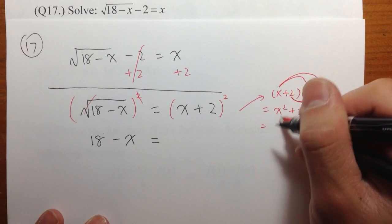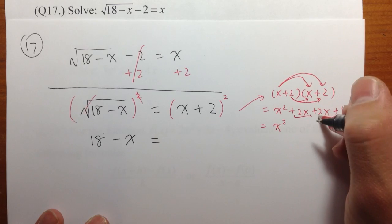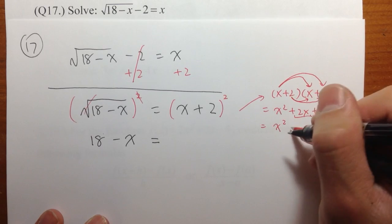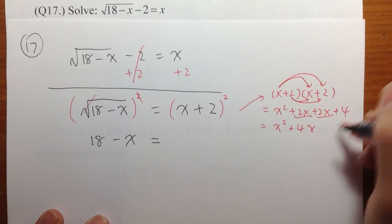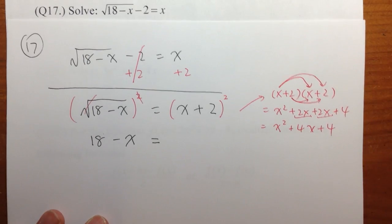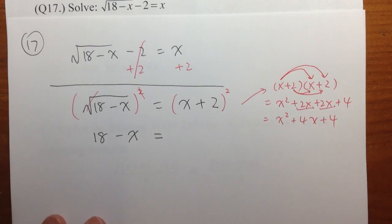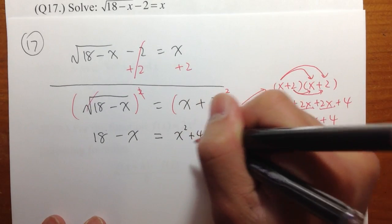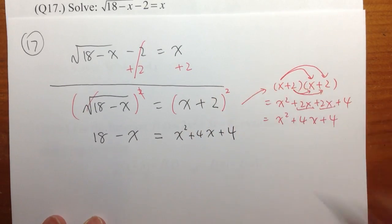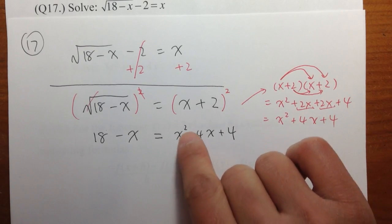At the end, we can combine terms. So you have x squared, and the 2x plus 2x, when you add them, it becomes plus 4x, and then plus 4. So we get x squared plus 4x plus 4. And now we have a quadratic equation, because we have x to the second power.